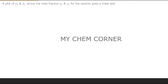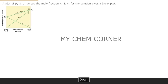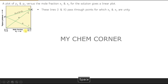A plot of p1 and p2 versus mole fractions x1 and x2 gives a linear plot. On the left side is mole fraction 1 and on the right side is mole fraction 2; vapor pressure is on the x-axis. Lines 1 and 2 pass through points where x1 and x2 are unity.